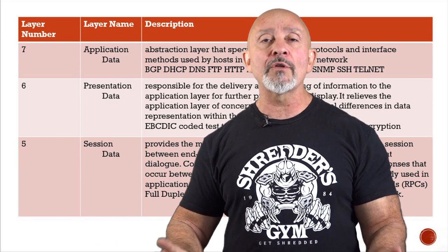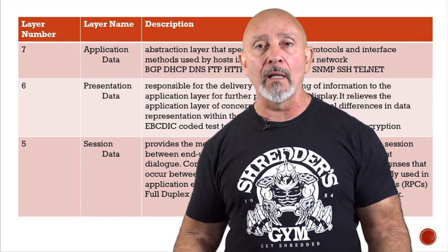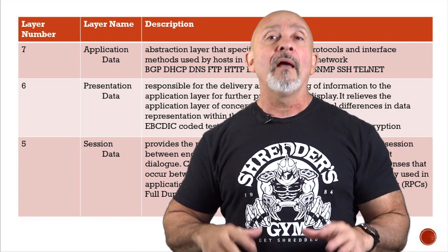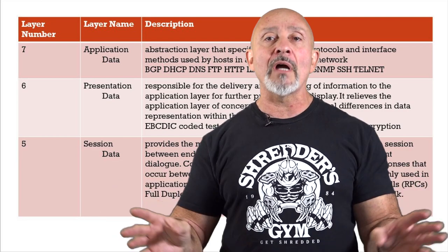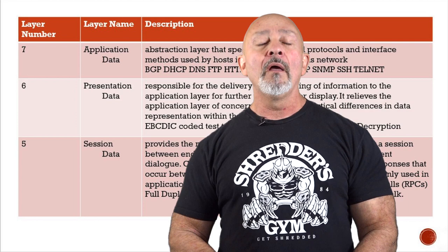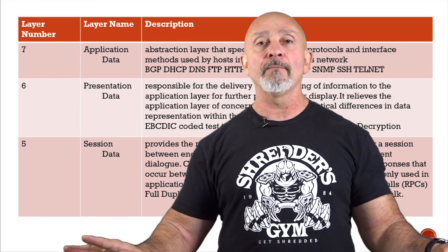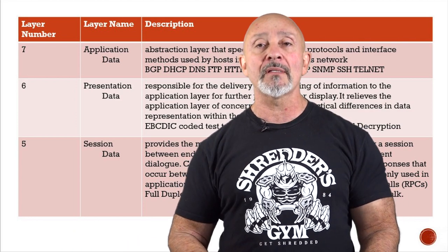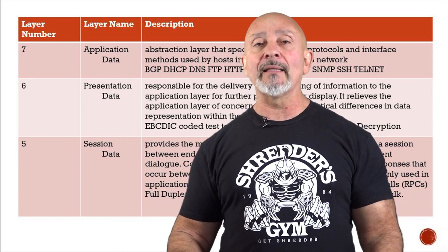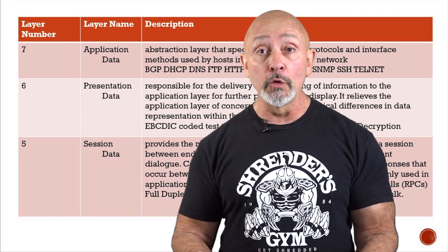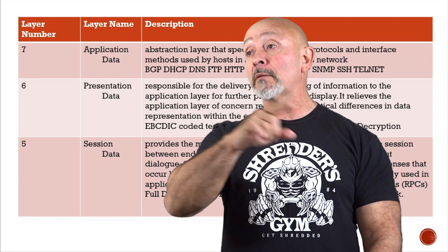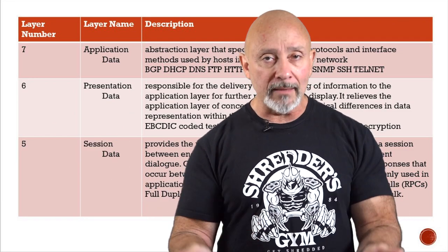This is what you really need to know for certifications and even the real world. The lingo you'll use: 'that's a layer two issue,' 'that's a layer three issue,' 'we're having a layer one issue - most likely the cable.' You're not going to invent a new layer for the OSI model. You have enough monitoring tools at your disposal to identify what's going on.